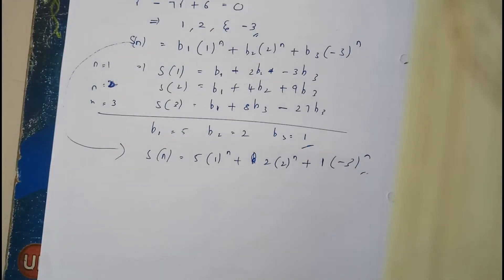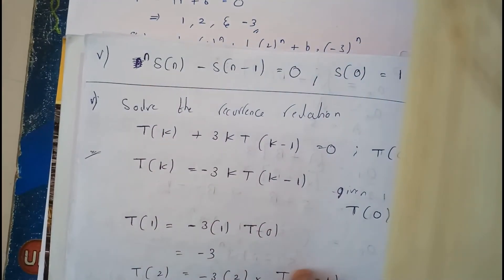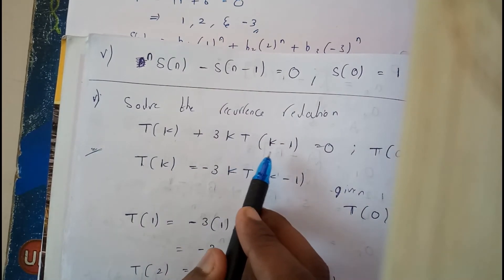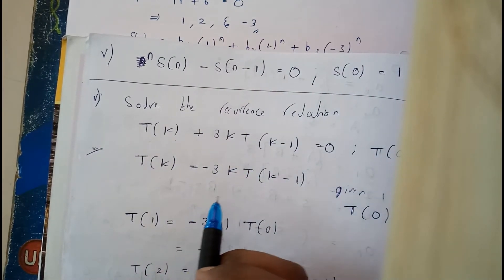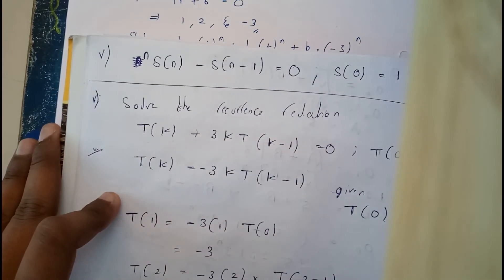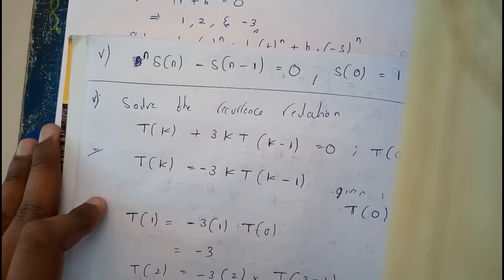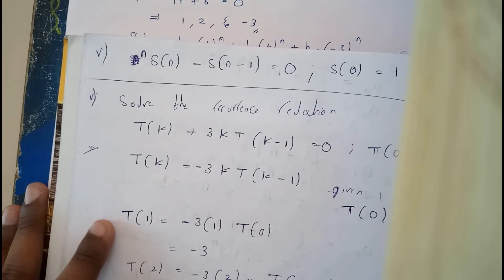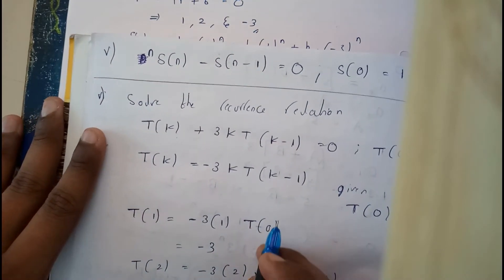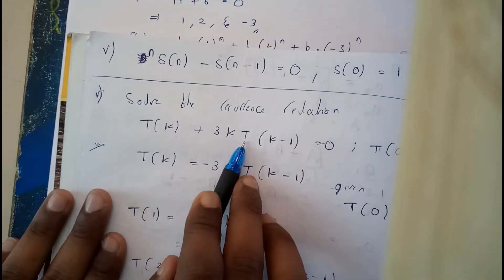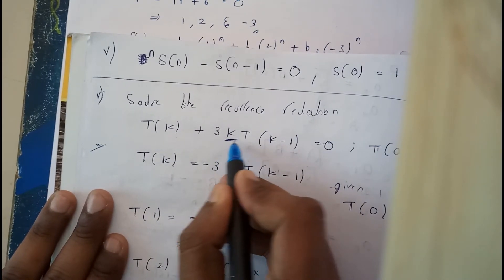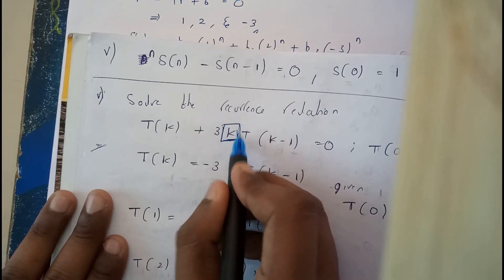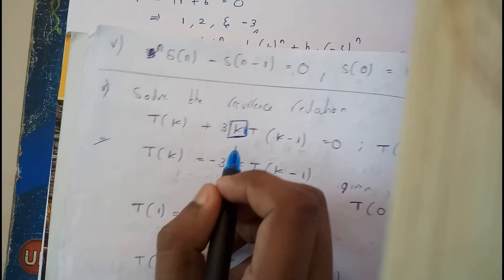Here is one more problem: t(k) + 3k·t(k−1) = 0. This is going to be a bit complex. Notice that there is an extra k term in multiplication — we cannot solve this like a normal recurrence. I will help you through it.